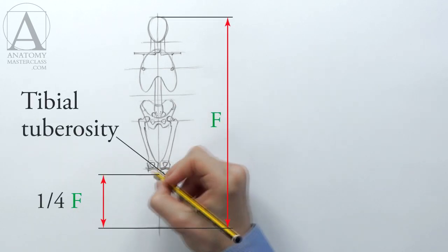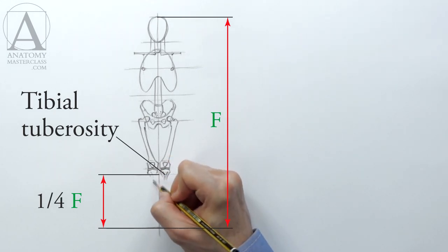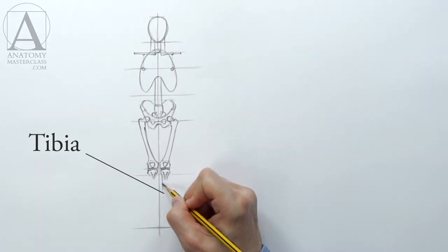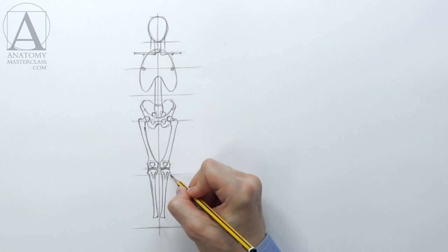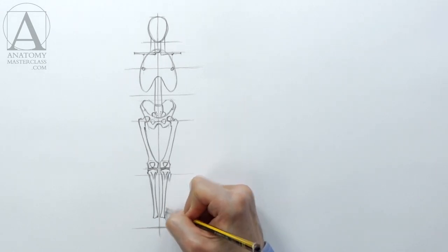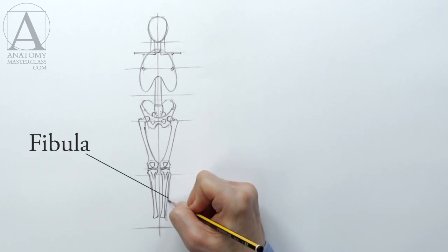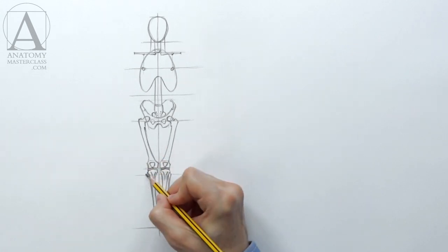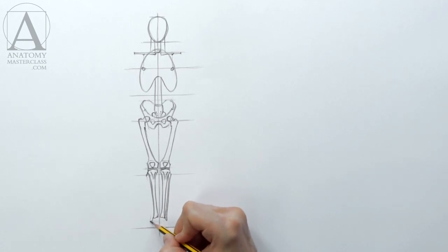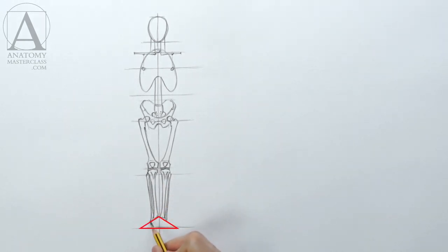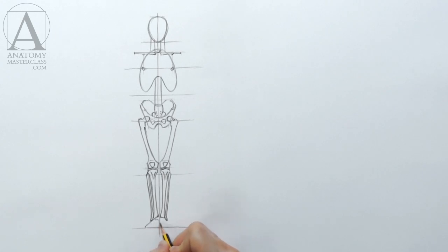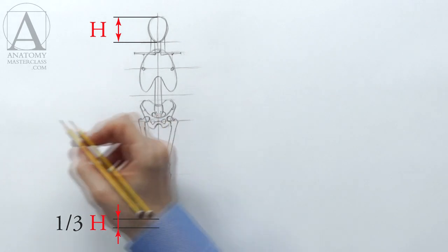The line of the lower quarter of the figure height goes through the tibial tuberosity, which is the elevation on the shin bone called the tibia. Next to the tibia is the calf bone, called the fibula, located on the lateral side of the lower leg. At the bottom, the calf bone ends lower than the shin bone — you can remember this by placing a triangle inside the feet, where the outside end is lower and the inside is higher. The height of the feet equals one-third of the head's height.